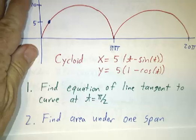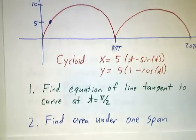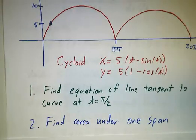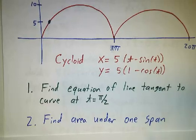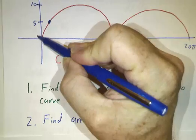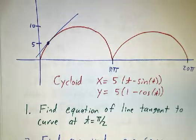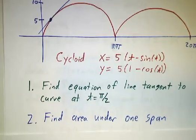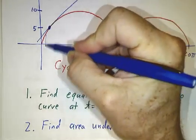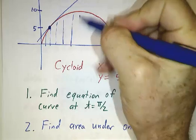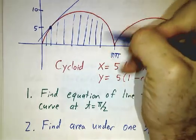And we want to do some standard calculus problems, like finding the equation of the tangent line at a certain point. The point we're going to take is at time π/2, that's this point. And the second thing is we want to figure out what is the area under one span of the cycloid.